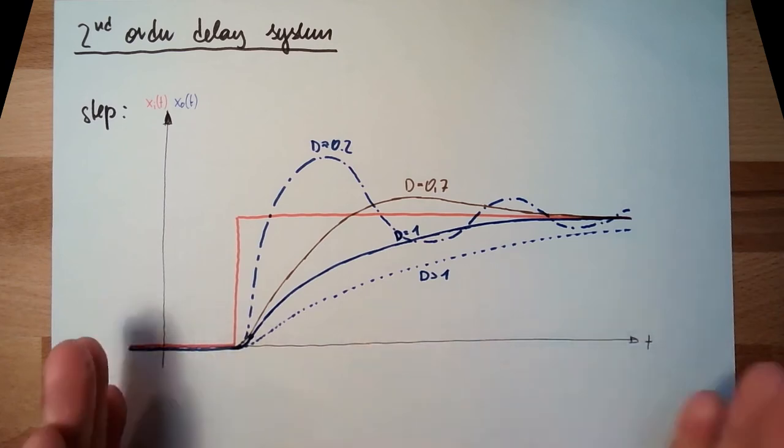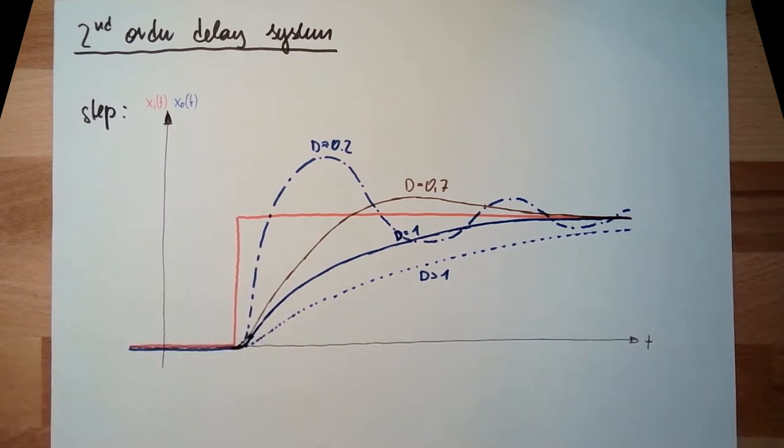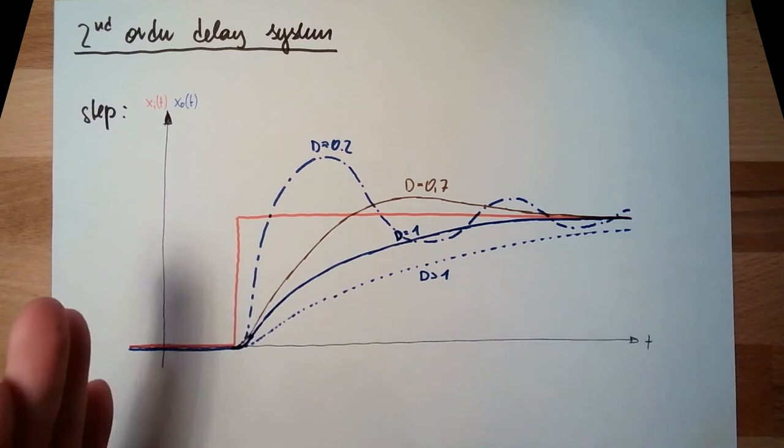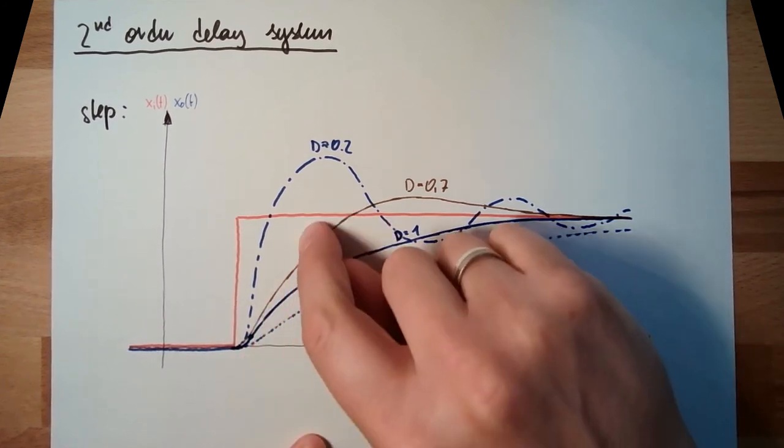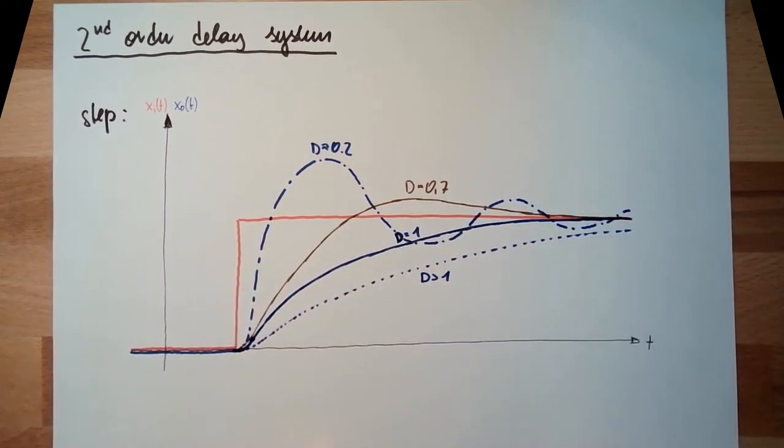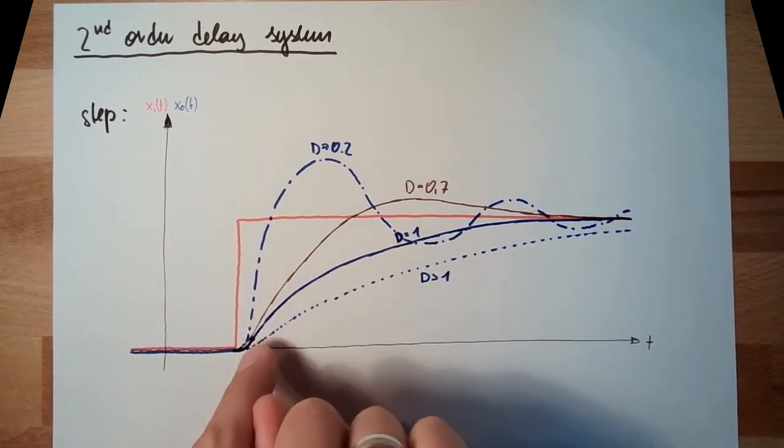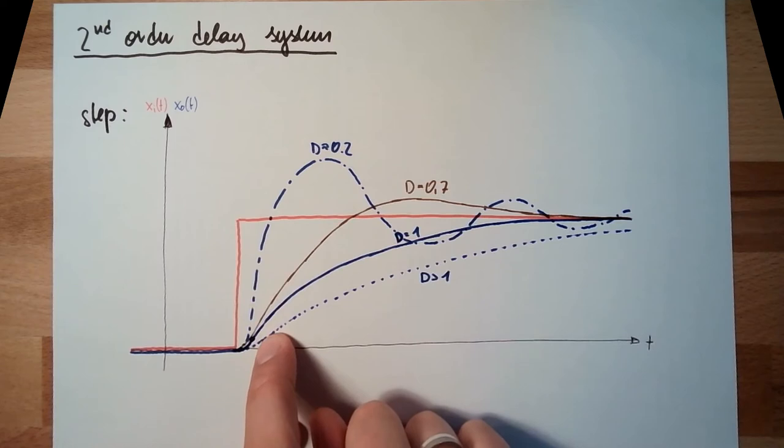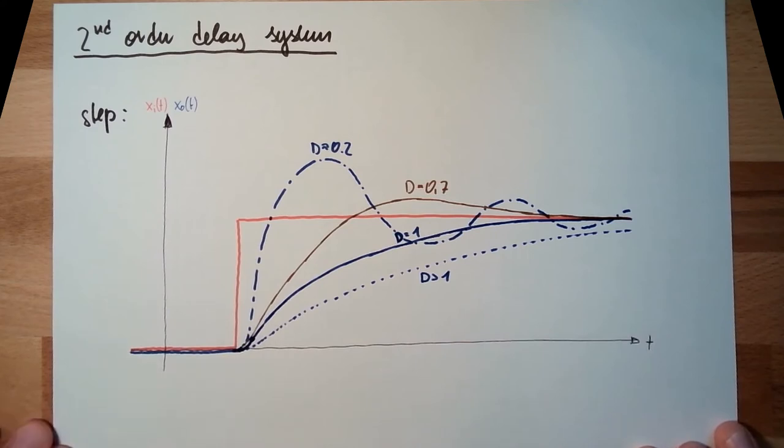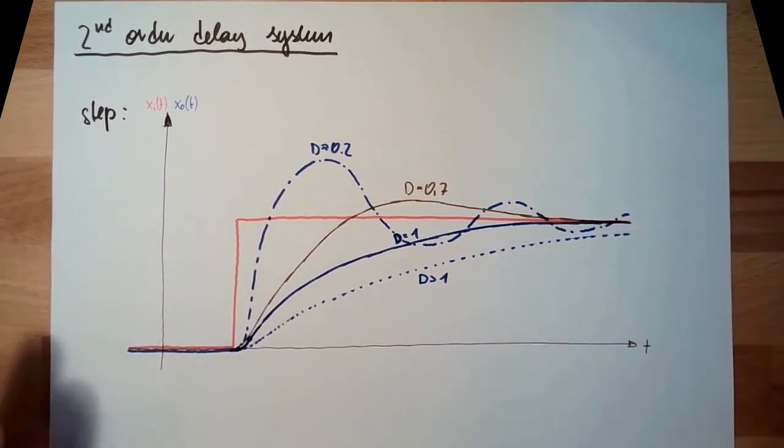So here we have characteristics, that's the time constant and the damping. The time constant cannot really be seen here, there is a possibility of doing this Wendepunkt tangent here, turning point tangent. But if you see a turning point, then it's a second order system. These are the possible step responses of a second order system.